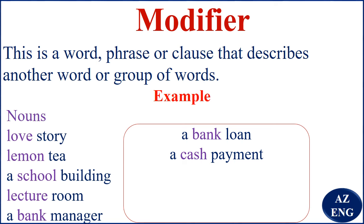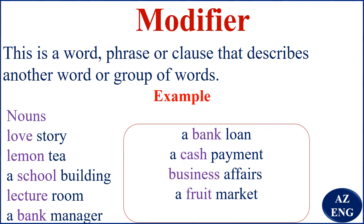'A cash payment' — 'cash' is our modifier. 'Business affairs' — 'business' is our modifier; it describes 'affairs,' telling us the affairs are related to or about business. 'A fruit market' — 'fruit' modifies 'market'; you know what kind of market it is — not one where you buy meat. 'A gift shop' — 'gift' modifies the noun 'shop.' So, love, lemon, school, lecture, bank, cash, business, fruit, and gift are all nouns used as modifiers.